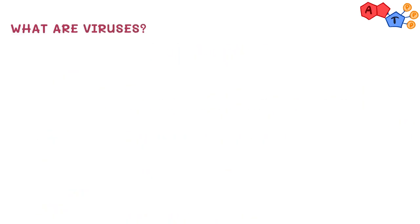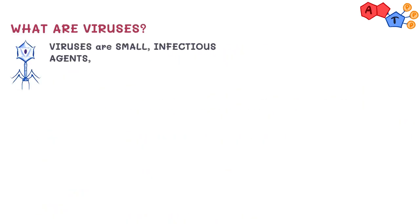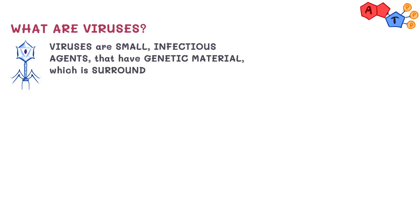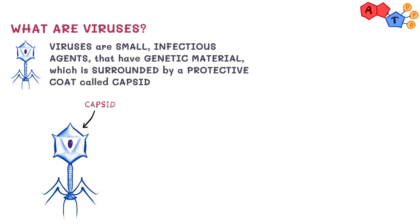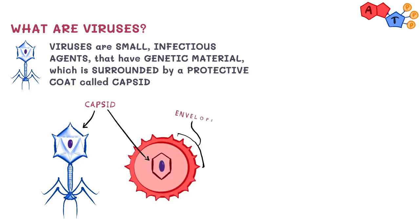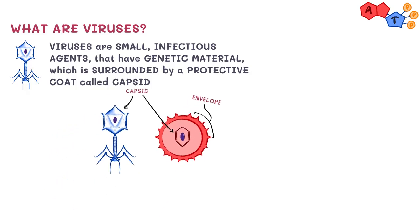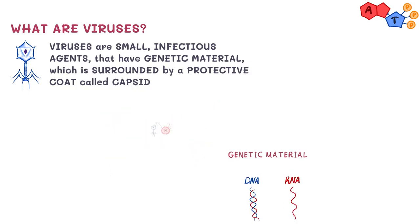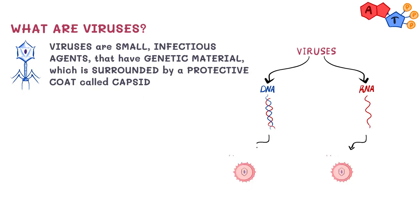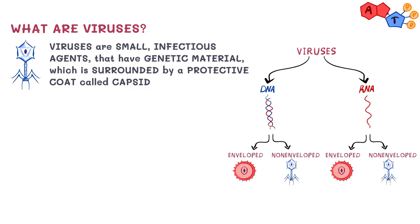So what are viruses? Viruses are small infectious agents, or intracellular parasites if you wish, that have genetic material which is surrounded by a protective coat called capsid. This is the definition and basic structure of a virus. Some viruses have more complex structures — in addition to the capsid, some viruses have envelopes on the exterior. The genetic material can be either DNA or RNA, and on this basis we can classify viruses into either enveloped or non-enveloped viruses. The non-enveloped viruses are also known as naked viruses.